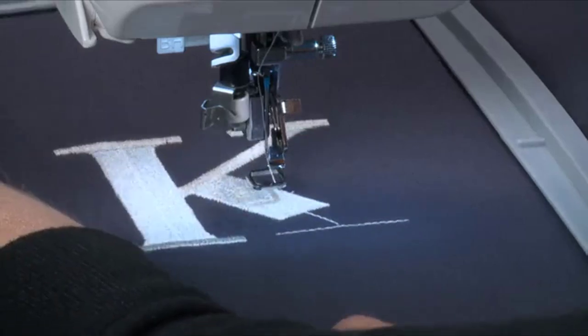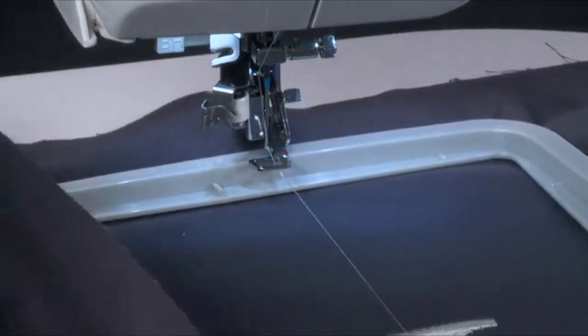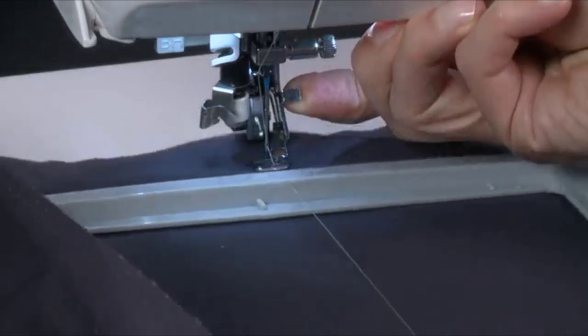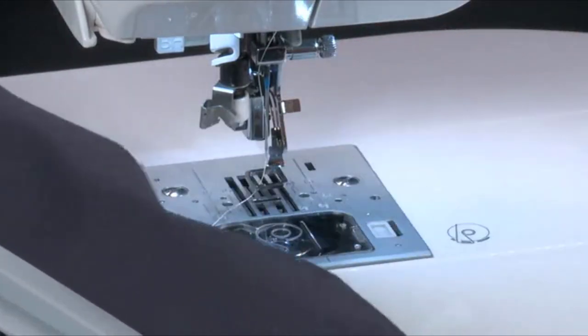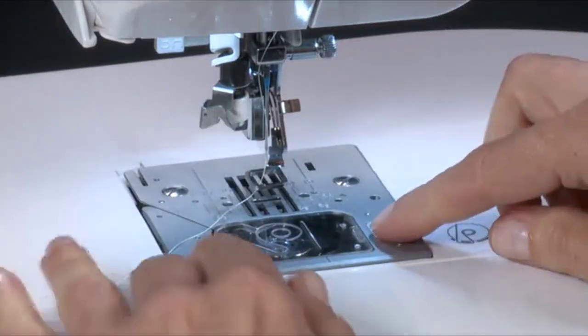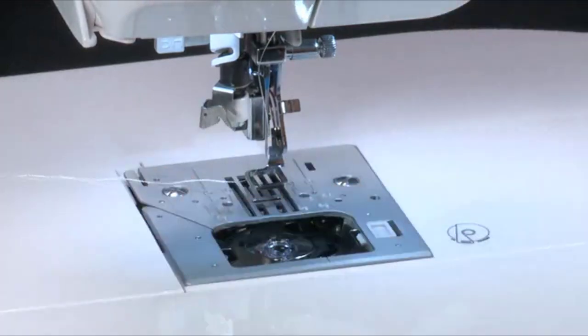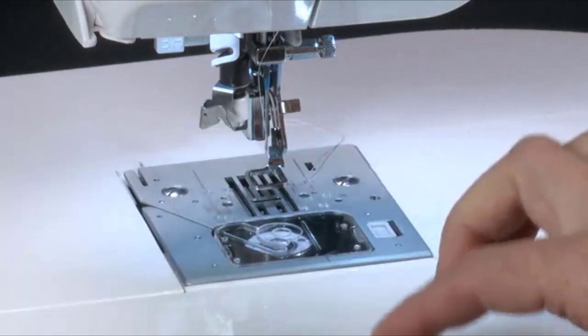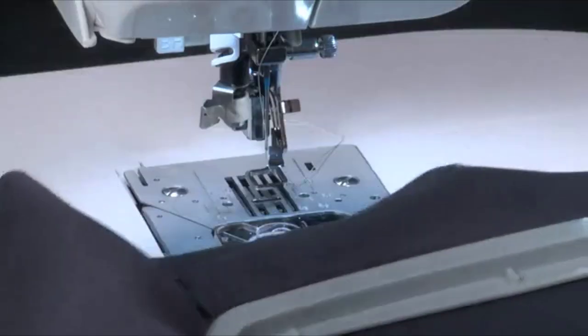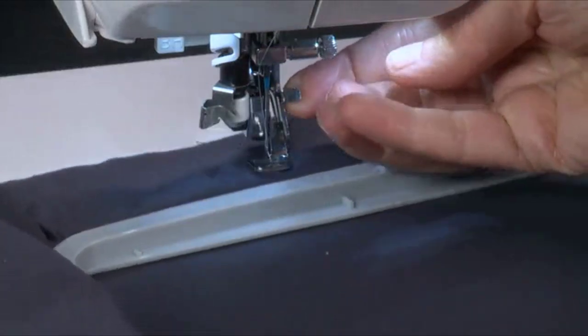To replace bobbins during the embroidery process, raise the presser foot lifter, remove the hoop from the machine and trim the thread, but do not remove the fabric from the hoop. Replace the bobbin, reattach the hoop, lower the presser foot, then continue.